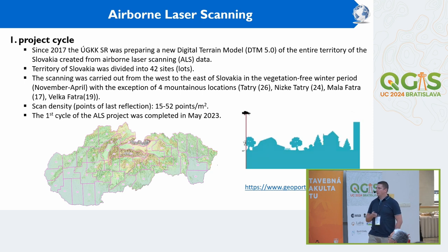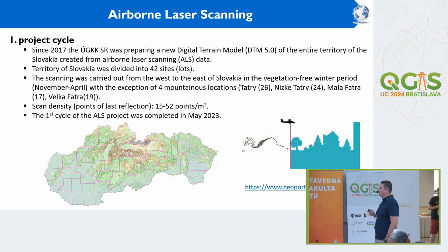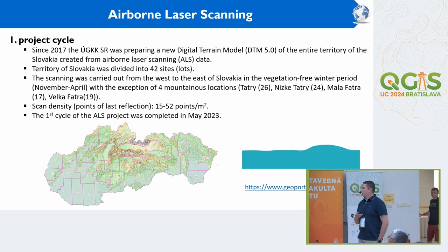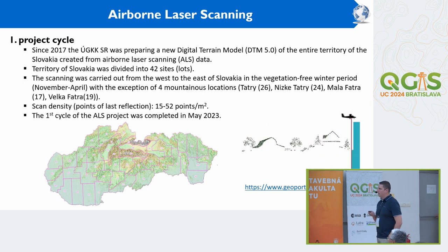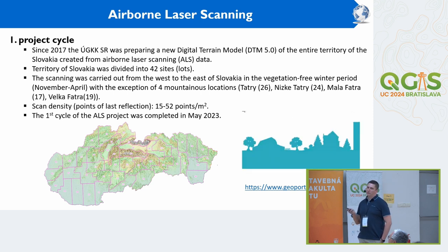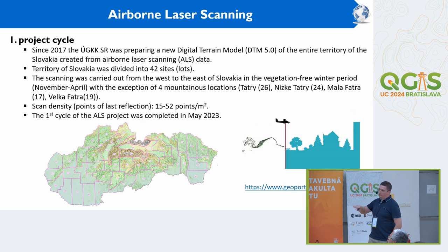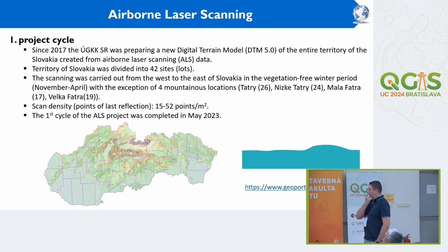First, I started with the aerial laser scanning project. In 2017, we decided to create a new, current and modern digital terrain model with data from aerial laser scanning. This project started that year and was completed last year in May, very successfully. We decided to divide Slovakia into 42 sections, called lots, and the scanning continuously took place from west to east.